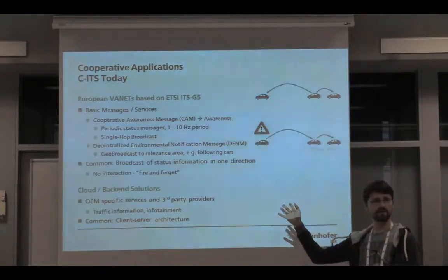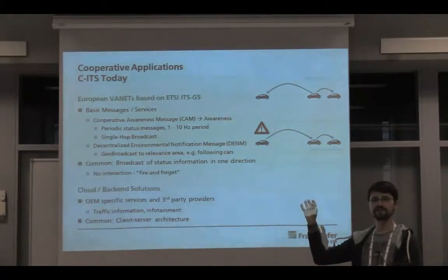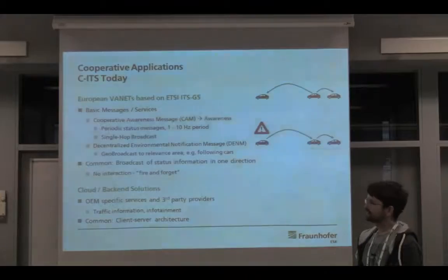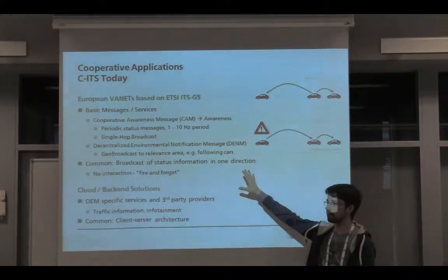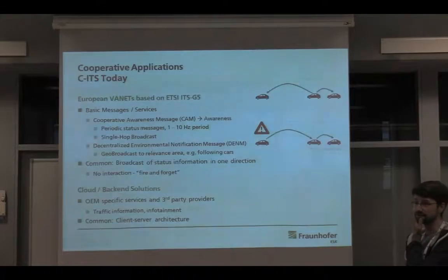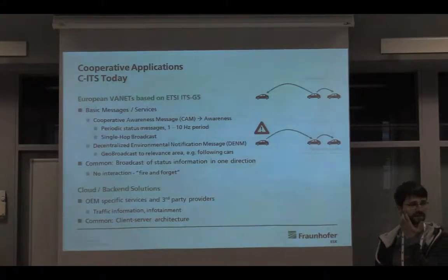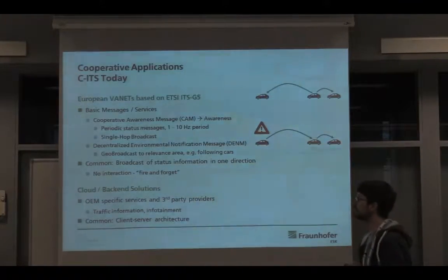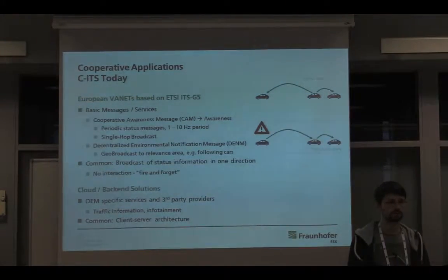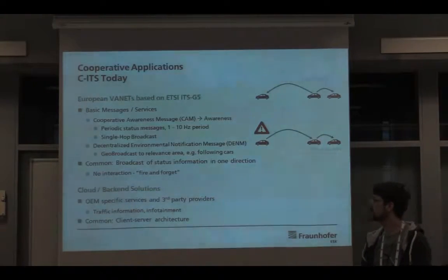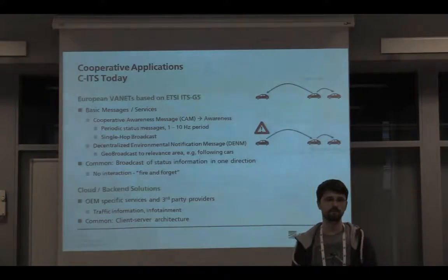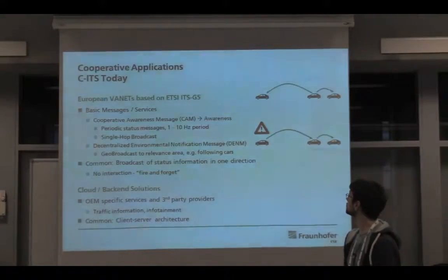Is anyone familiar with CAM and DENIM? In local communication, as I want to outline with today's systems, we broadcast information in one direction. Measuring just the propagation delay is already difficult because we have an information flow in one direction without any feedback — so it's fire and forget more or less. On the other hand, we have cloud or back-end based solutions, often provided by OEMs or third-party providers for infotainment and traffic information, which use a client-server architecture providing roadworks information or similar services.